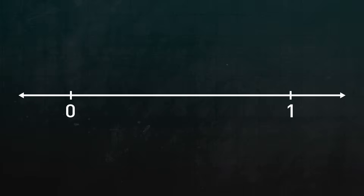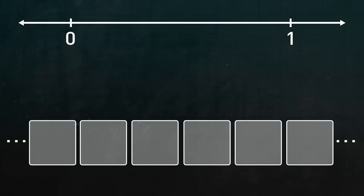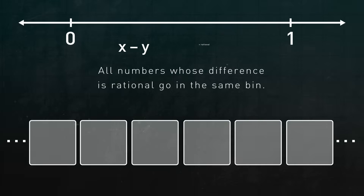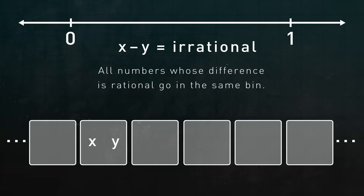Start with the interval 0 to 1. We're going to sort all the numbers in the interval into bins in a sort of unusual way. There will be infinitely many bins. We're going to put all the numbers whose difference is rational in the same bin. In other words, look at two numbers in our interval x and y. If x minus y is a rational number, they go in the same bin. But if x minus y is an irrational number, they go in different bins.